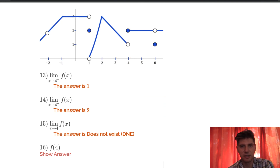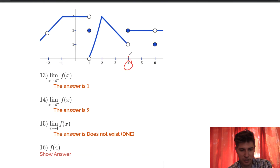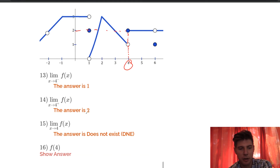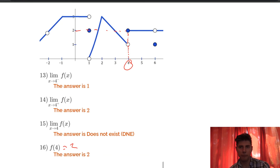Number 16: f of 4 — what is the function value at x equals 4? It's not here because there's a hole right there. But there is a defined point up here with a nice big dot, showing the top one is defined, not the bottom one. That large dot occurs at y equals 2, so f of 4 is 2.